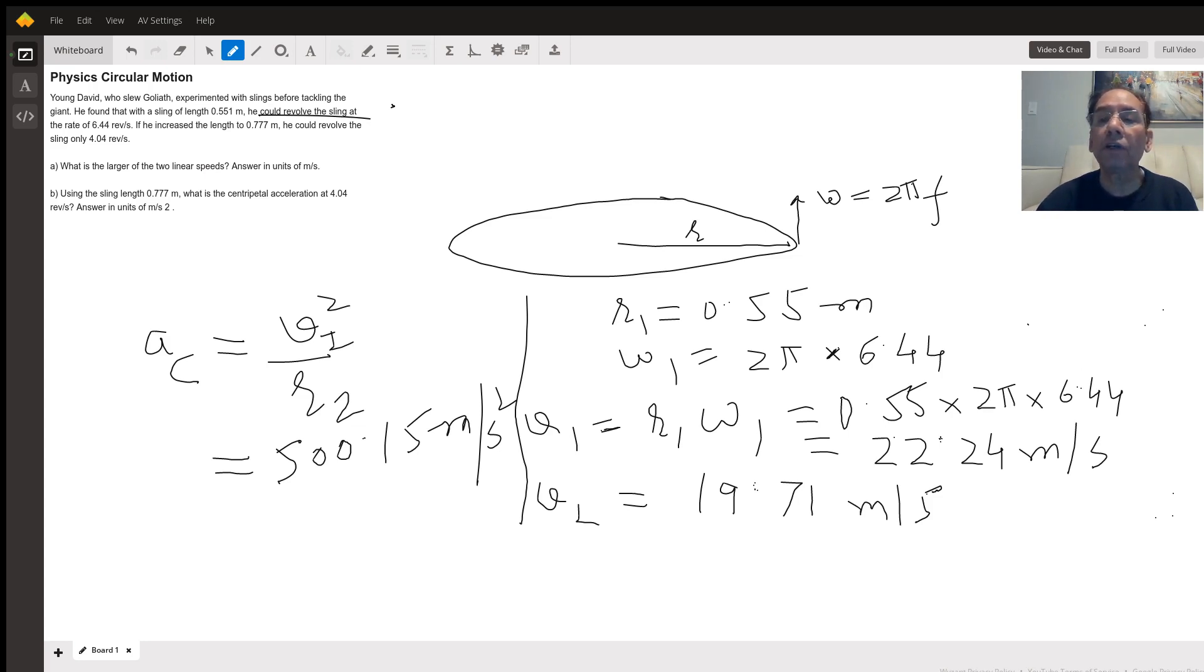So the first velocity is 22.24 meters per second and the second one is 19.71 meters per second.